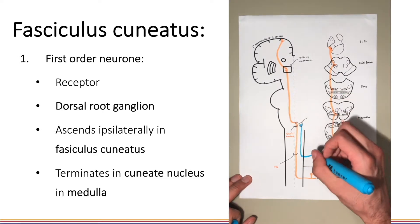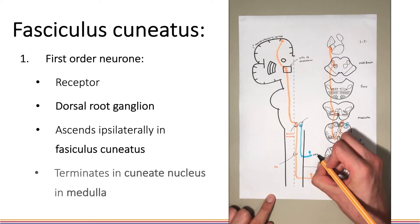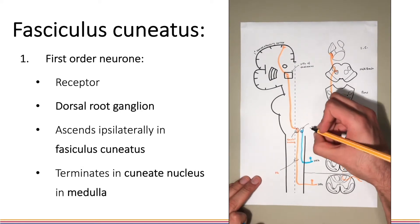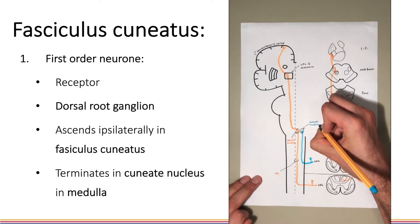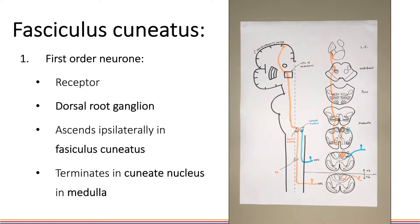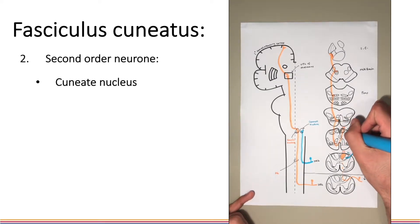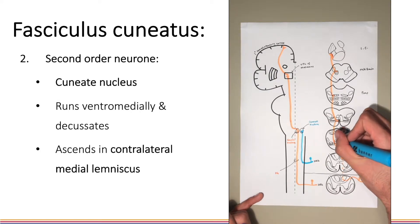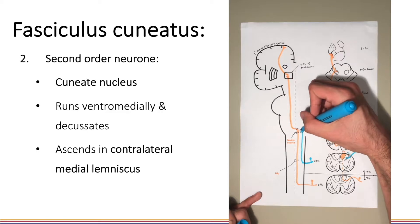Here you can see the first order neuron entering at the dorsal root ganglion before ascending in the fasciculus cuneatus and terminating in the cuneate nucleus. In the cuneate nucleus this neuron synapses with a second order neuron which then runs ventromedially again in the internal arcuate fibres across the midline to enter the medial lemniscus.